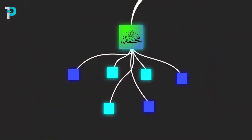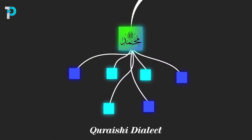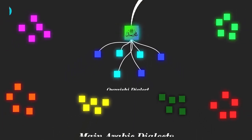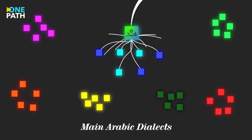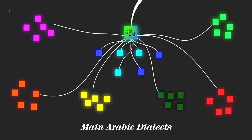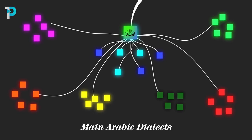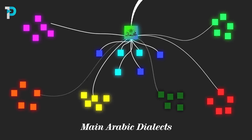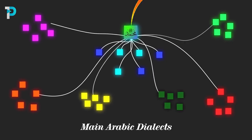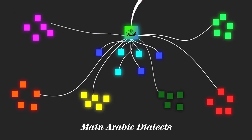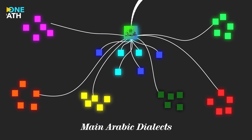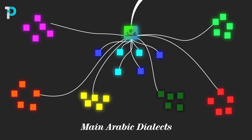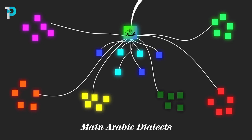However the dialect of the Qurayshi tribe that the Prophet spoke in wasn't the only dialect of the Arabian peninsula and as the religion was adopted by a growing number of tribes they began to struggle with understanding the Qur'an. To overcome this the Prophet was given permission to teach the Qur'an in seven of the main dialects in the region allowing the message to be understood more widely. But these dialects didn't really affect the written records as they were only different when the Qur'an was actually vocalized.